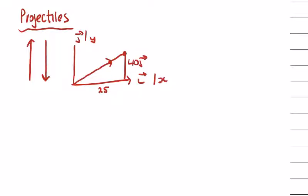So we'd write our initial vector u as 25i plus 40j, and we have an angle in here, let's call it the angle a.